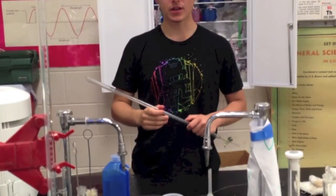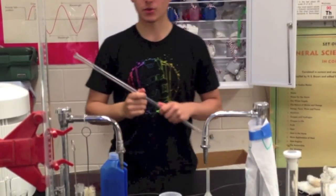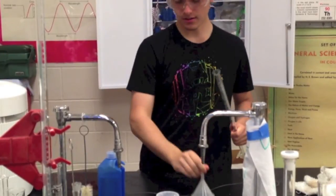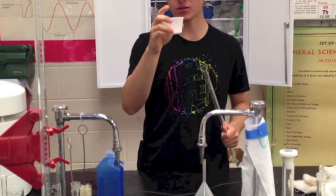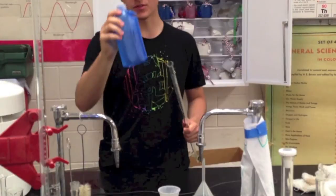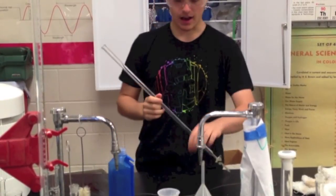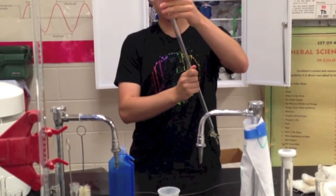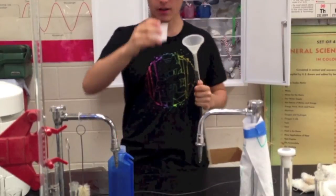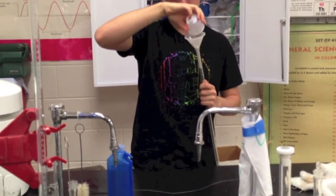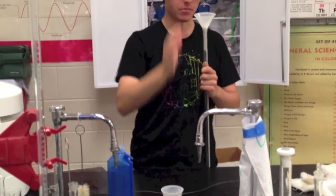Before conducting any sort of titration, you need to clean your burette. In order to do that, you're going to need a funnel, about a gram of Alkonox detergent, and a lot of distilled water. Now, place the funnel in your burette and pour the Alkonox in. Make sure it's all in the burette before you start.